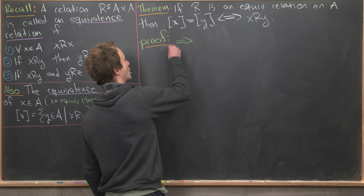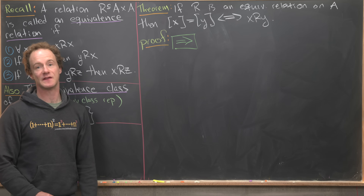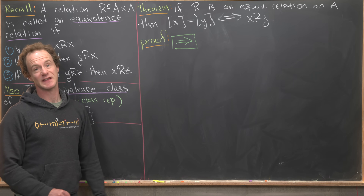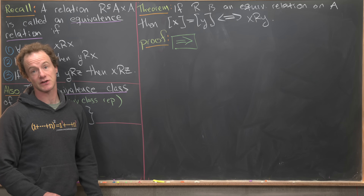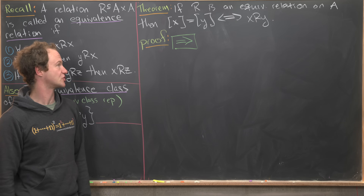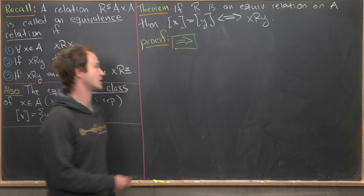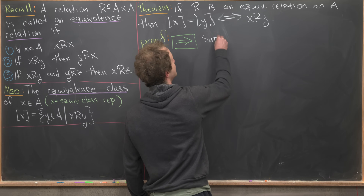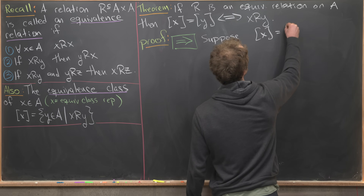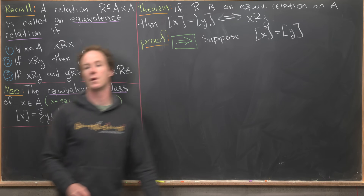This is a biconditional statement, which means there are two things to prove. We need to prove the forward direction — starting by assuming the equivalence classes are equal and showing the two elements are related — and then also prove the reverse direction. So let's do the forward direction first, supposing that the equivalence class of X is equal to the equivalence class of Y.